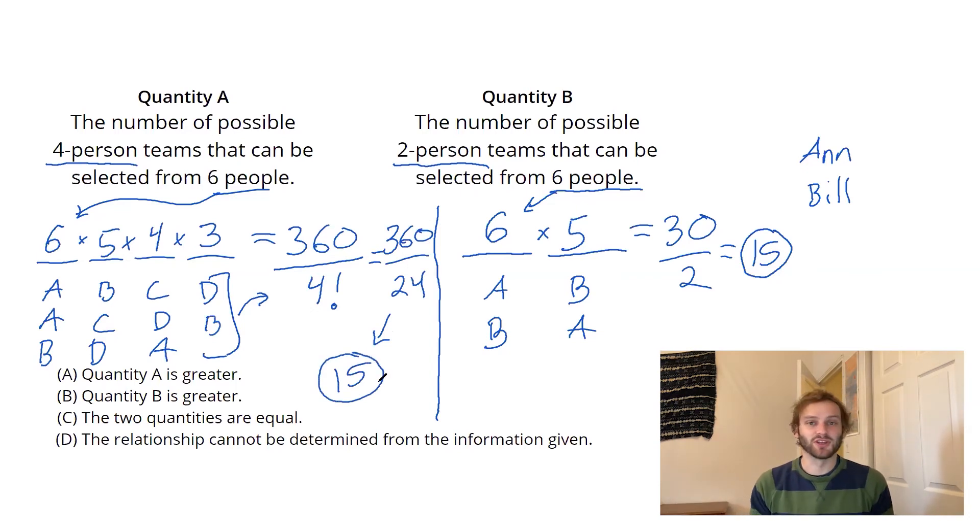15 options for picking my four-person team, 15 options for picking my two-person team. The answer is C. The two quantities are equal.